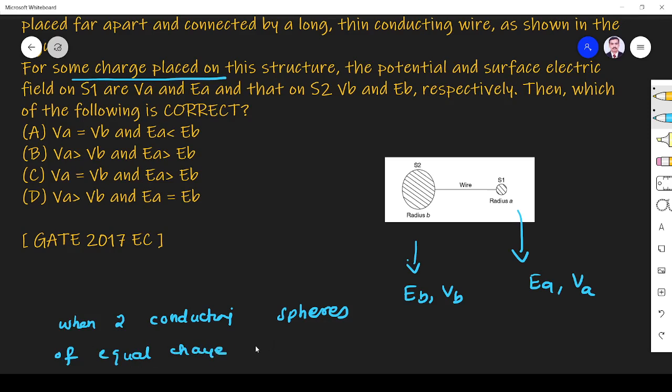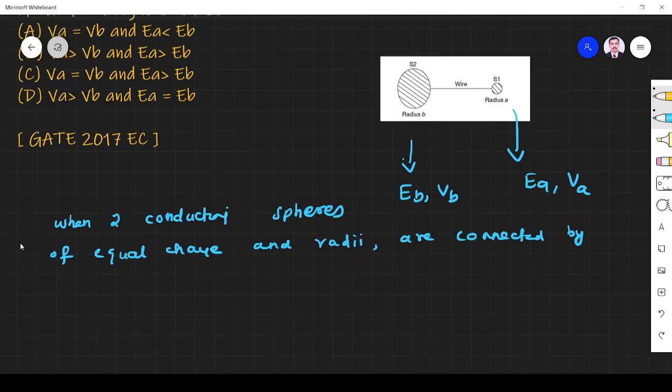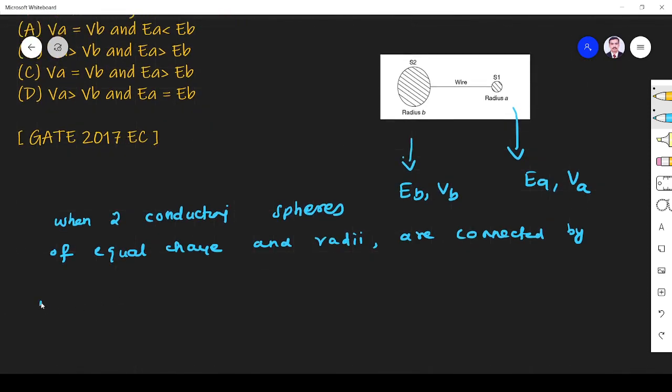And different radii, this is equal charge but different radii, are connected by a thin wire. What will happen? Are connected by thin wire.